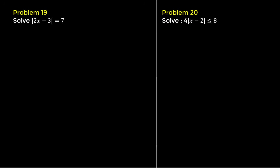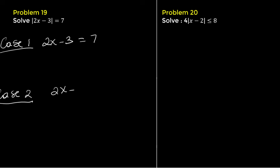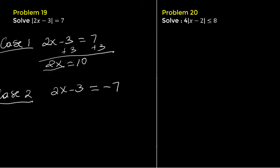Problem 19. Solve the absolute value of 2x minus 3 equals 7. We write two cases. Case 1: 2x minus 3 equals 7. Case 2: 2x minus 3 equals negative 7. Solving case 1, add 3 to both sides to get 2x equals 10. Divide both sides by 2: x equals 5.